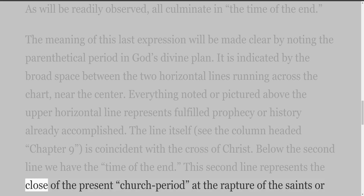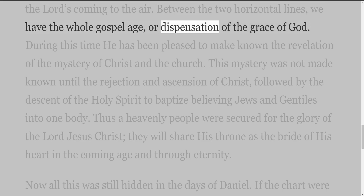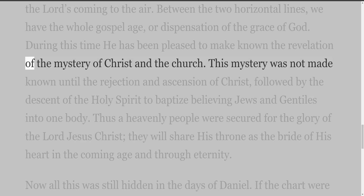Below the second line we have the time of the end. This second line represents the close of the present church period at the rapture of the saints, or the Lord's coming to the air. Between the two horizontal lines we have the whole gospel age, or dispensation of the grace of God. During this time, God has been pleased to make known the revelation of the mystery of Christ and the Church.